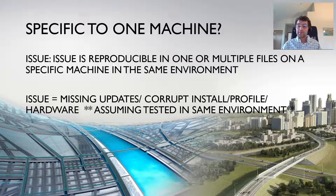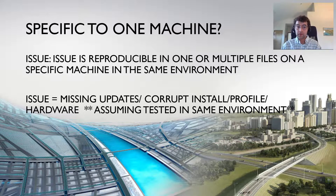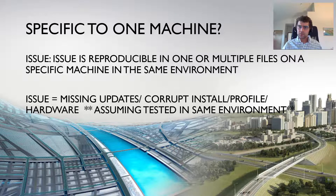Path two: specific to one machine. My coworker is sitting next to me in the office, I have an issue with Civil 3D, my coworker does the same thing and does not see the issue. What that indicates is the issue is reproducible in one or multiple files on a specific machine in the same environment. This really eliminates variables like a server, VPN, or people in and out of the office that can bring on unforeseen issues. There's something wrong with your machine that is not wrong with your coworker's machine — this is a machine-specific issue.